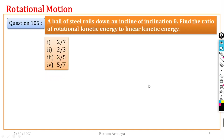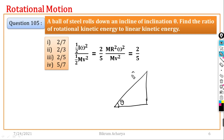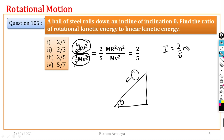Question number 105: A steel ball rolls down an incline of inclination theta. Find the ratio of rotational kinetic energy to linear kinetic energy. Rotational KE equals 1/2 Iω², linear KE equals 1/2 mv². For a solid sphere I = 2/5 mR², giving the ratio as 2/5.